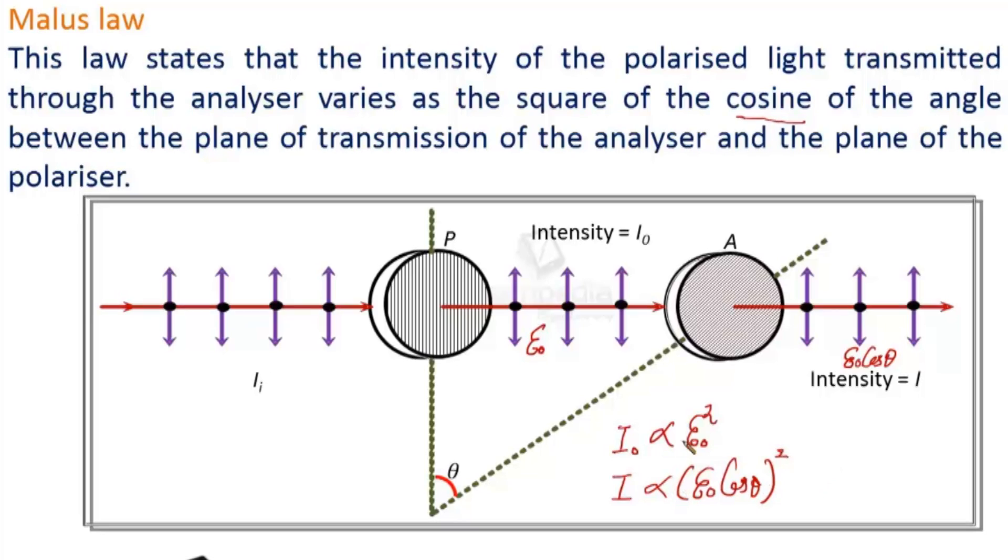And here you can understand that proportionality constant is going to be same in these two equations. So on dividing what we get is I divided by I₀ is equal to cos² θ. So this is law of Malus: I = I₀ cos² θ.